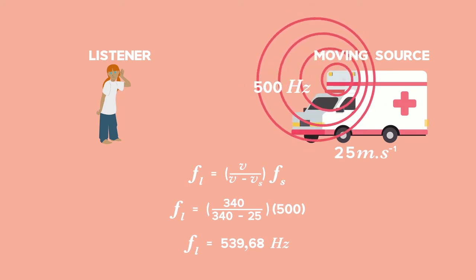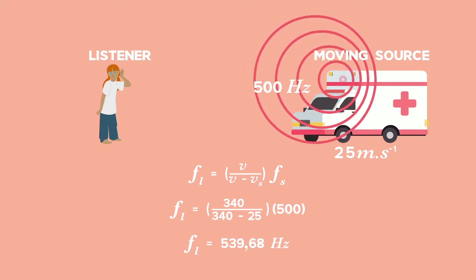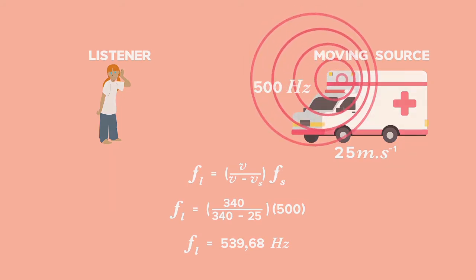The prediction part of your approach is vital when looking at these questions, as it's quick to realise when you've made a mistake with a sign, or maybe even chosen the wrong equation.